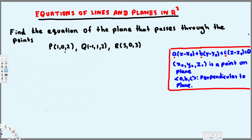In order to find the equation of the plane we need a point and a normal vector. Here they didn't give us the normal vector, so we have to find it. To find the normal vector, we can take two component vectors and then do the cross product — that's going to give us the normal vector.